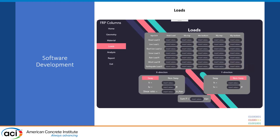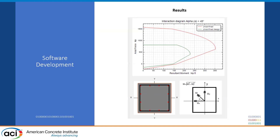The loads include all load combinations from ACI 318-19, as well as sway and no-sway options for slender columns, along with the associated parameters such as K — the effective length factor — and the unsupported length of the column.